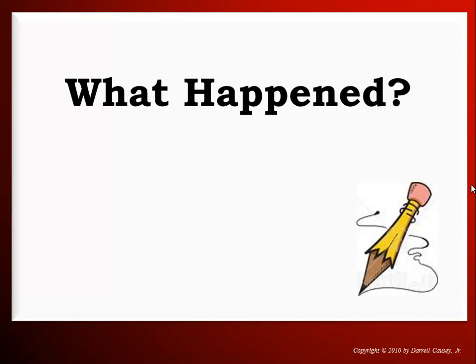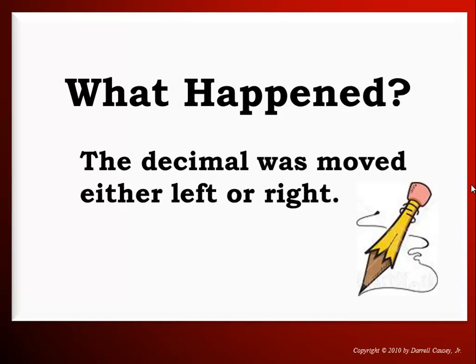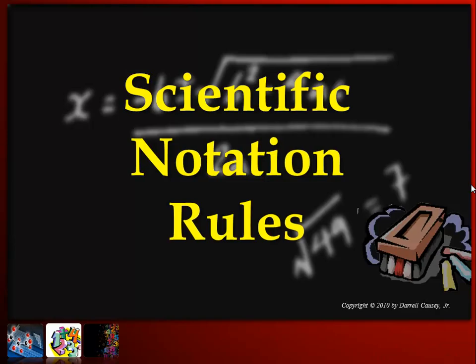But what happened? If you notice, the decimal was moved either left or right. And that's what it's all about - left or right. We have a goal, and that is to get it in proper scientific notation. We do that by moving the decimal left or right. Well, exactly what is proper scientific notation?